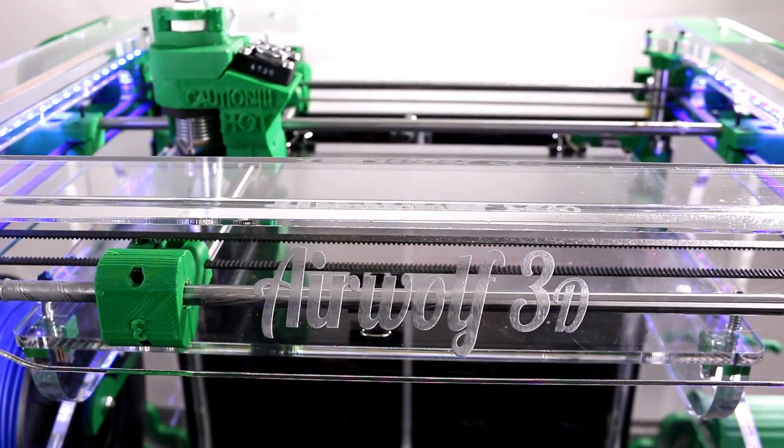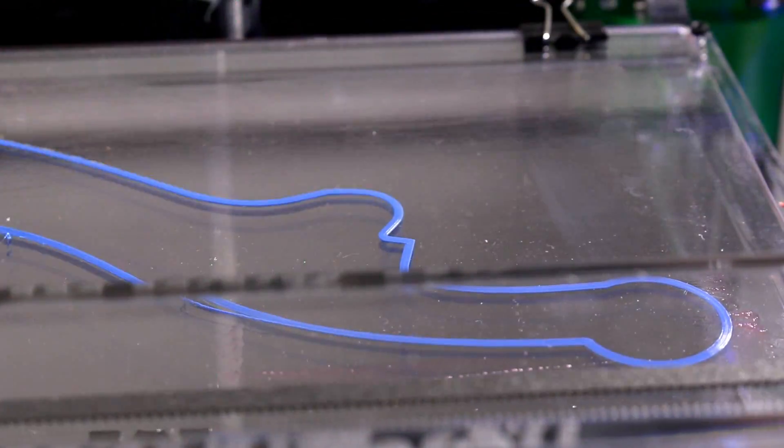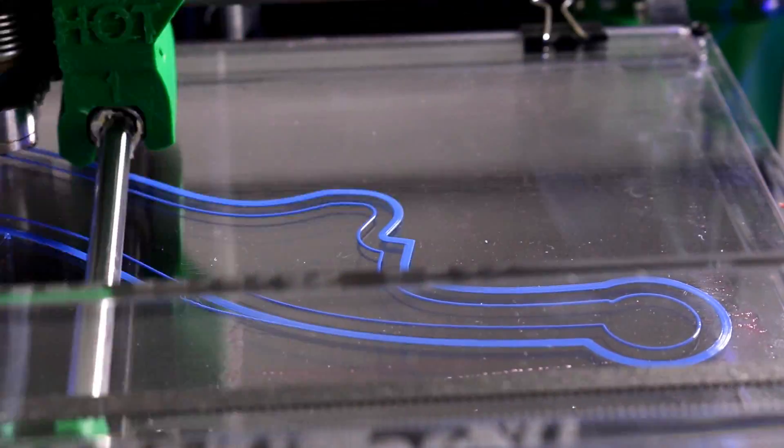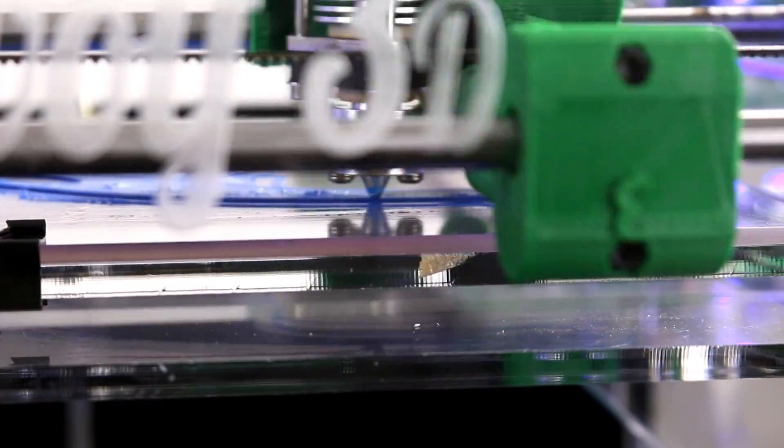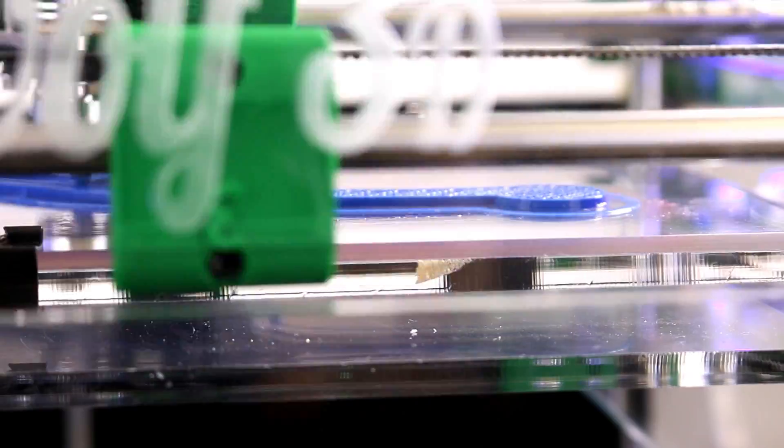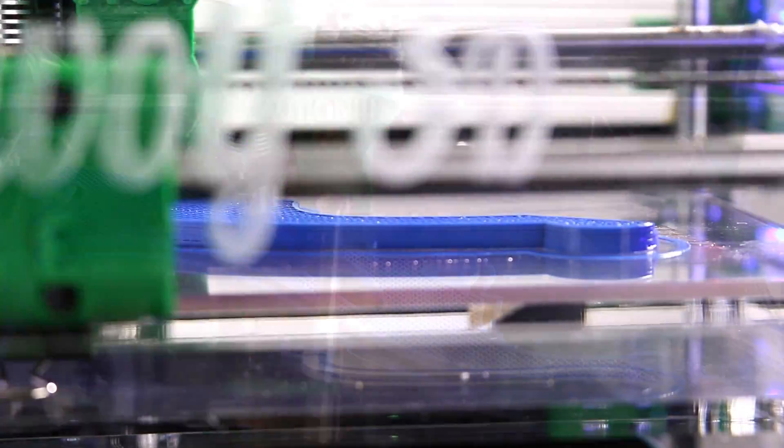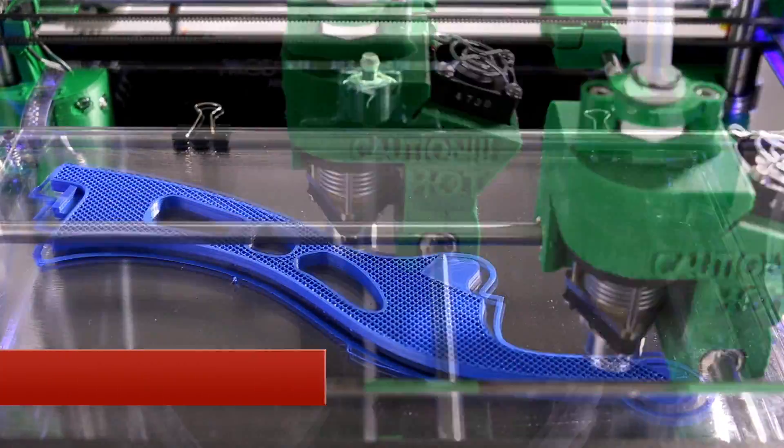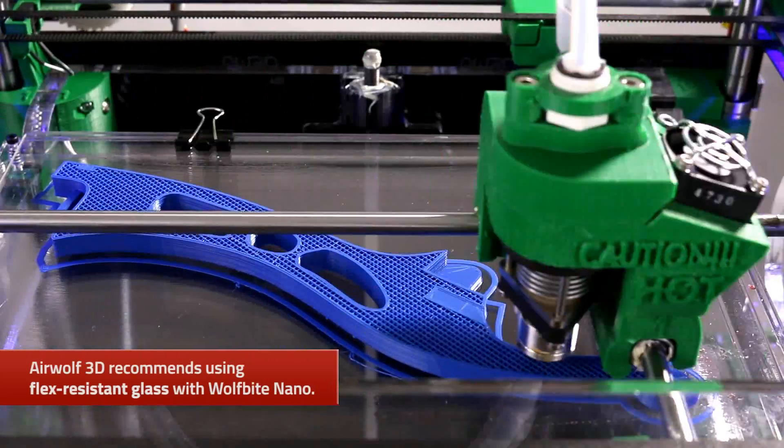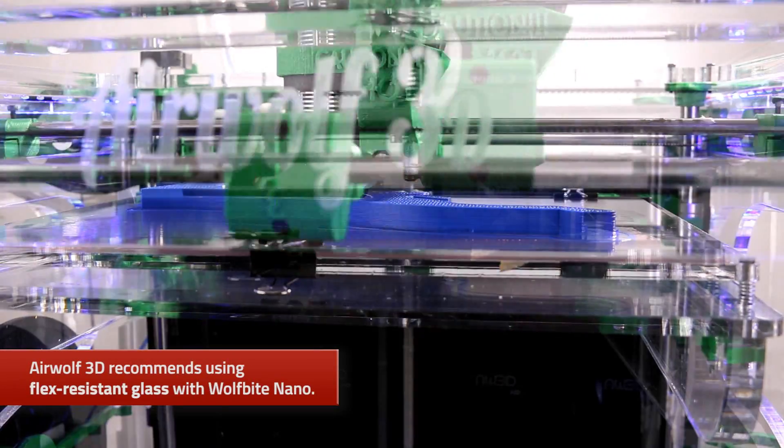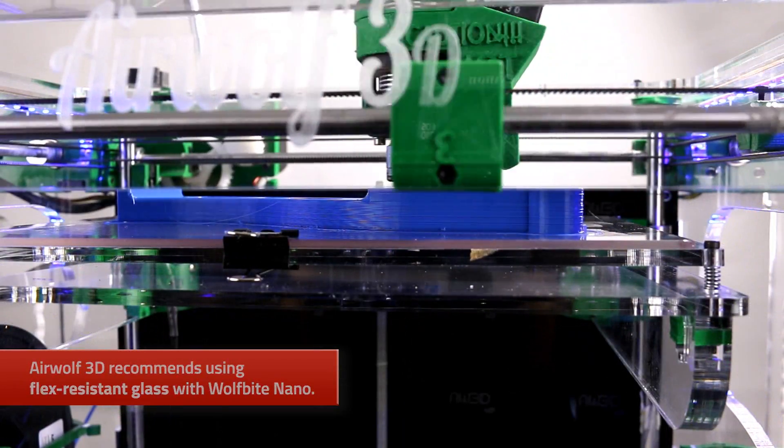After the Wolf Bite Nano dries, it's time to start printing. During the print, you will notice your model sticks to the bed without warping and will not lift off the glass.